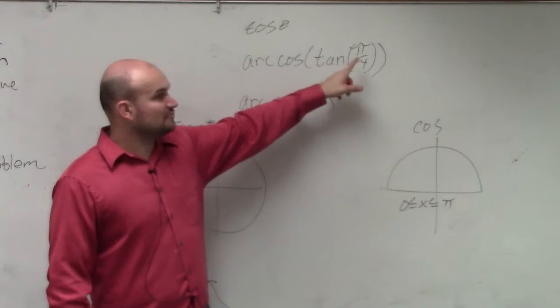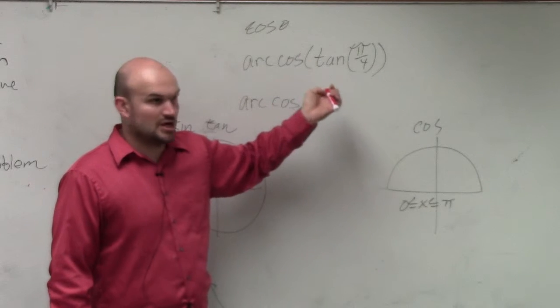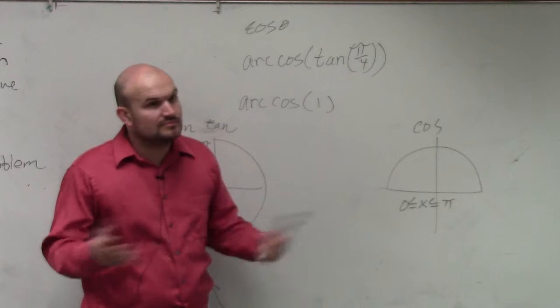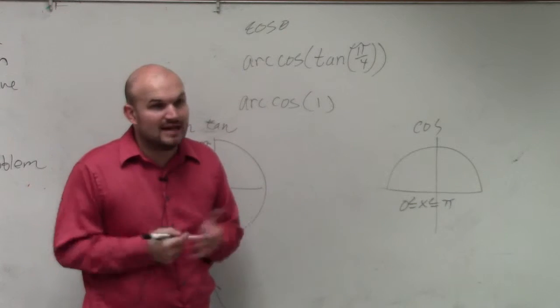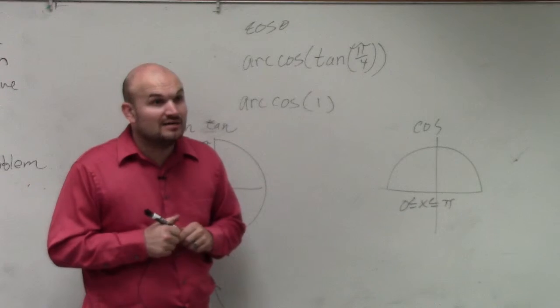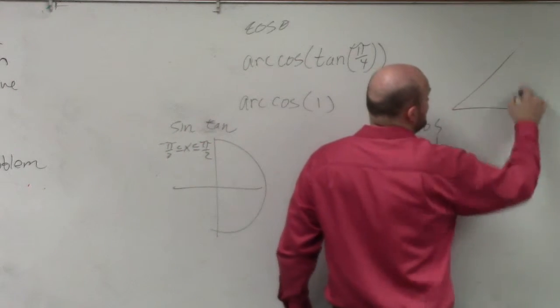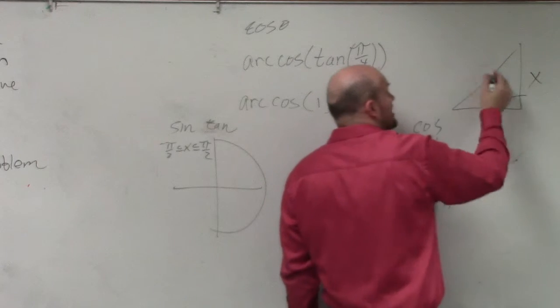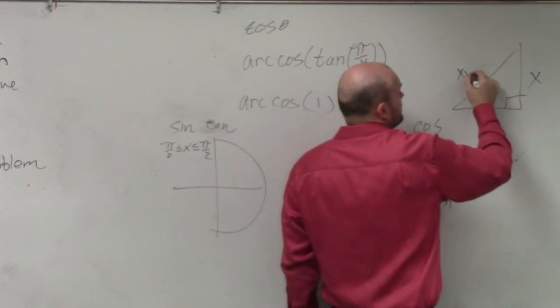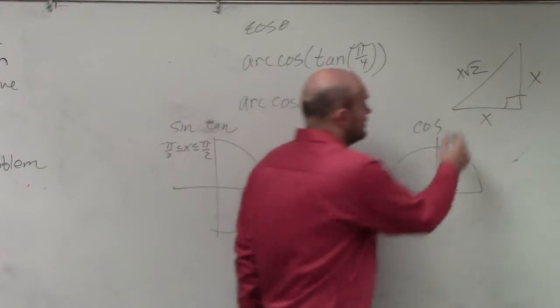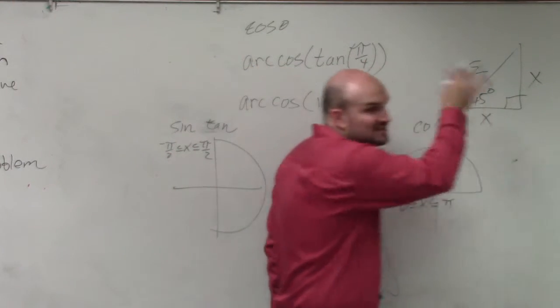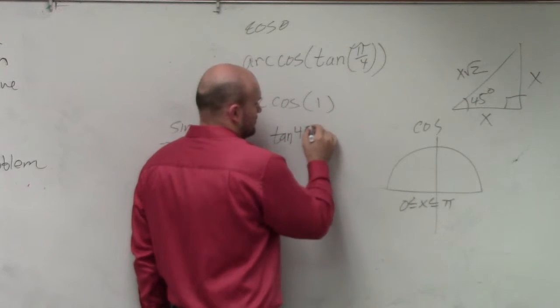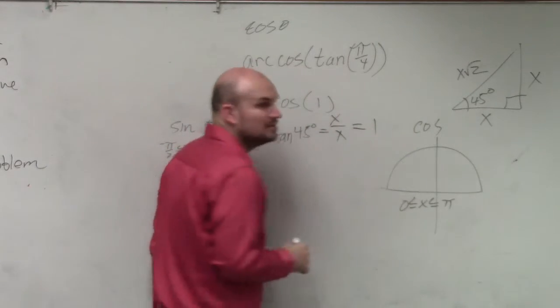Again, this is saying tangent of π over 4. So, tangent π over 4 is the same thing as what? Pi over 4. What is π over 4 is the same as what degree angle? 45. So you have a 45 degree triangle, right? Who cares what the side lengths are? You know that a 45 degree triangle has those side lengths. Here's 45 degrees. Who cares if it's on the unit circle or not? What is the tangent of 45 degrees? 1.